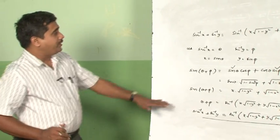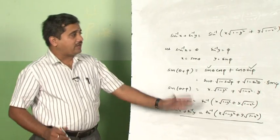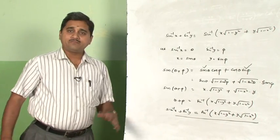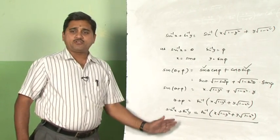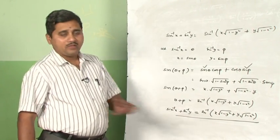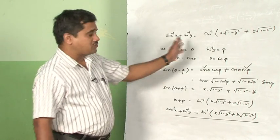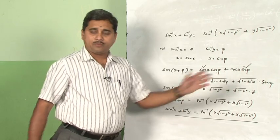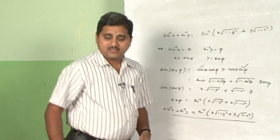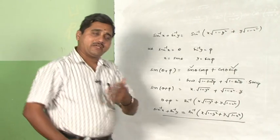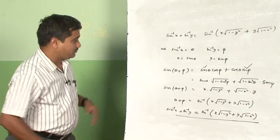In a similar fashion, you can deal with the remaining 5 problems. The procedures remain the same; only the formulas you have to apply are cos(A plus B), cos(A minus B), tan(A plus B), tan(A minus B).